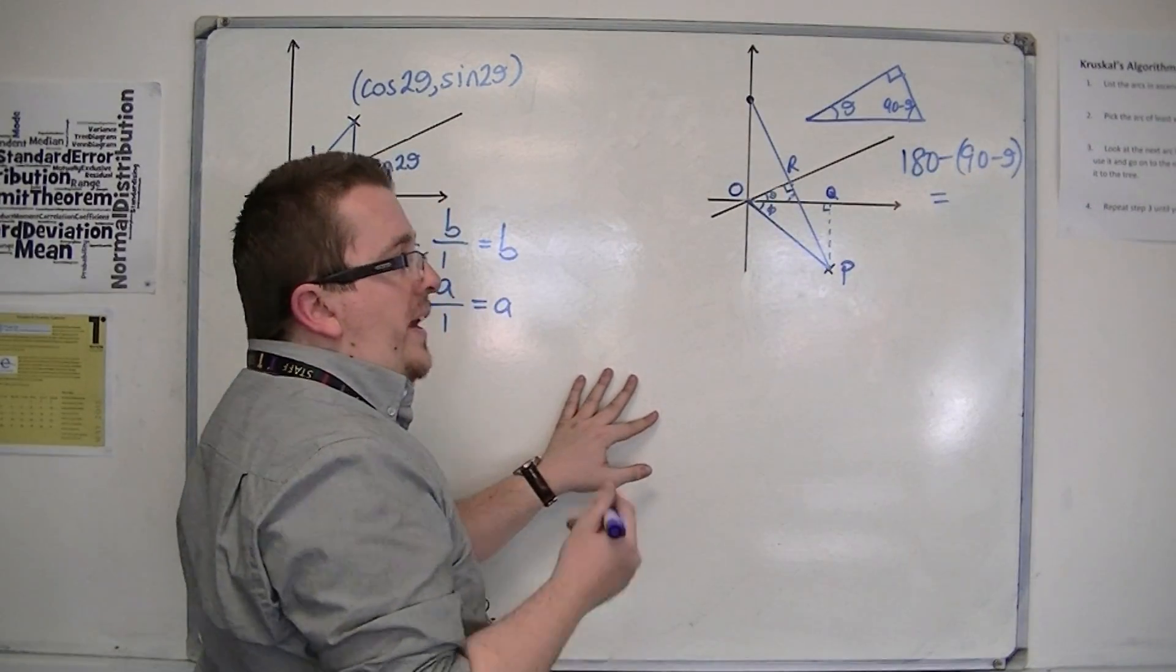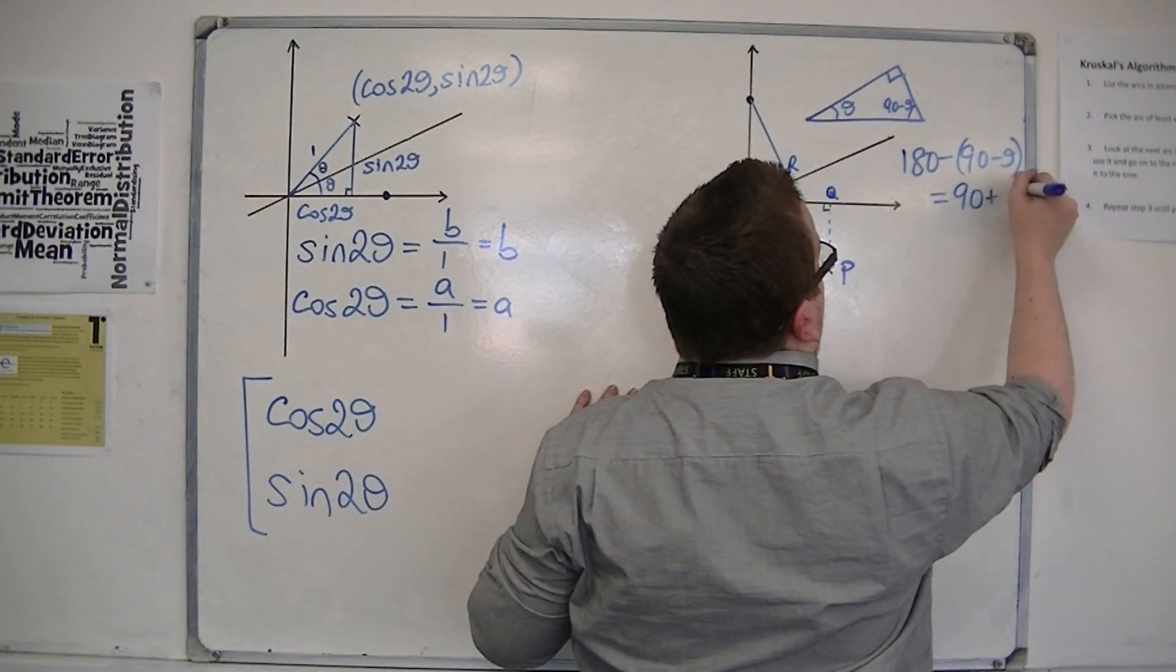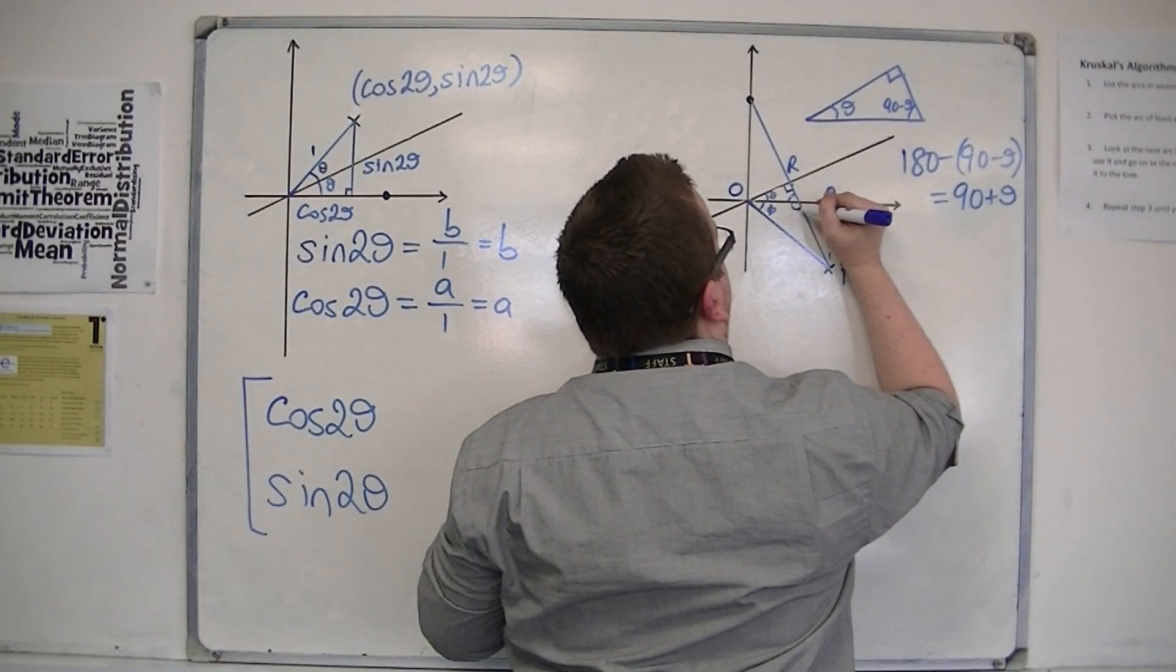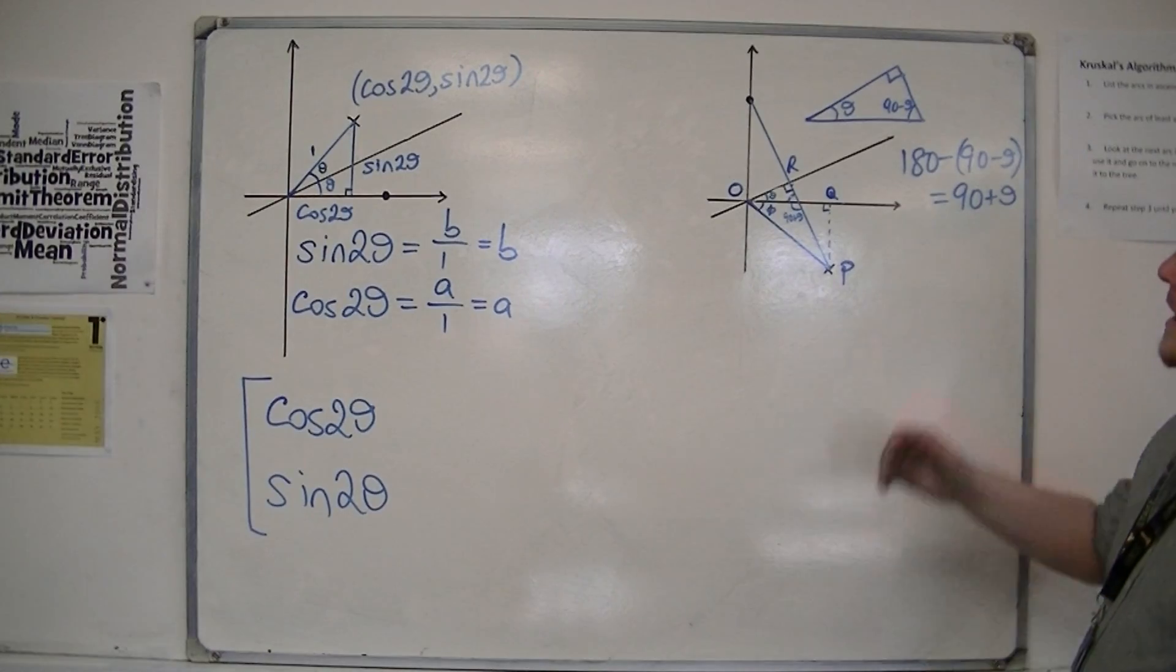Then I can work out this angle, because that's 180 take away 90 minus theta. So 180 degrees take away 90 take away theta is 90 plus theta. So that's 90 plus theta there.